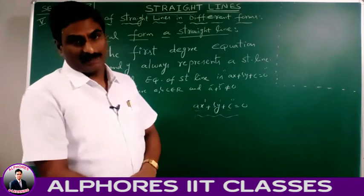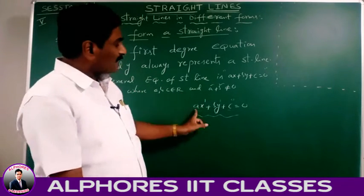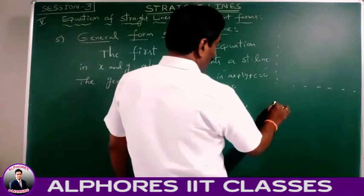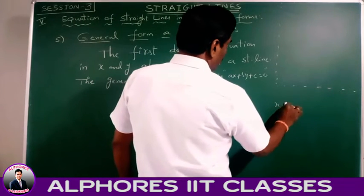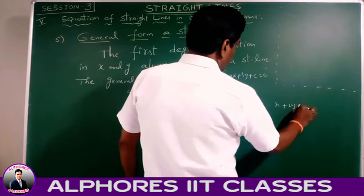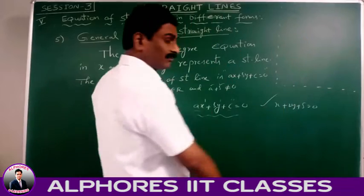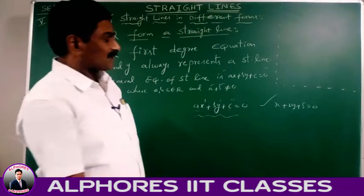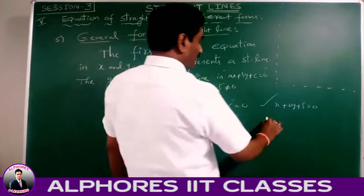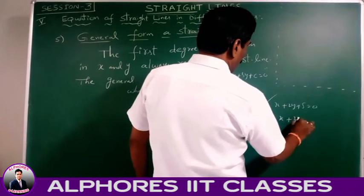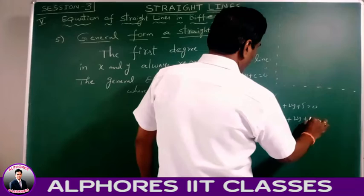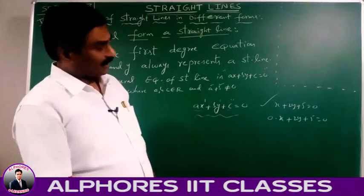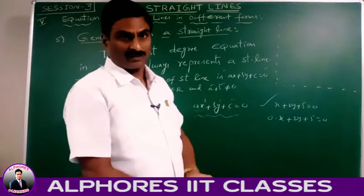Here, a, b, c are real numbers. Suppose the equation is x + 2y + 5 — it is the standard or general form of the straight line. Suppose the equation is 0·x + 2y + 5 = 0 — it is also a standard form of the equation of the line.